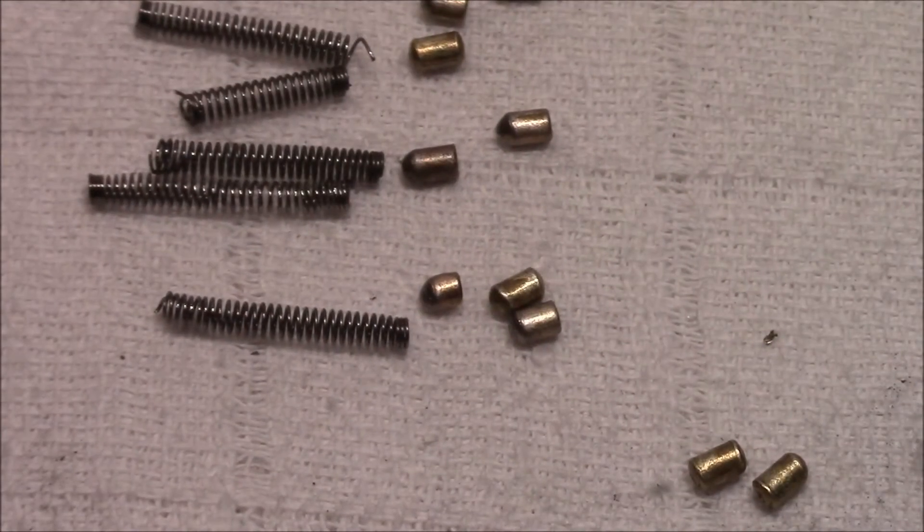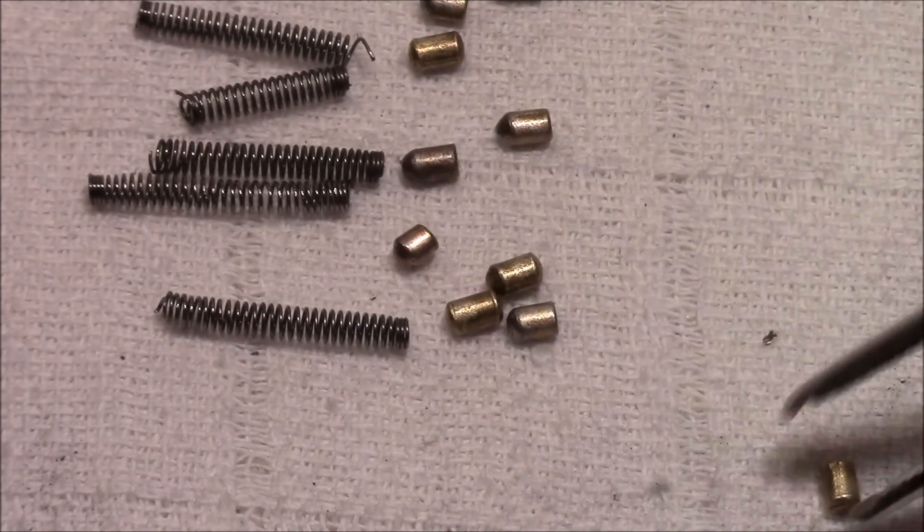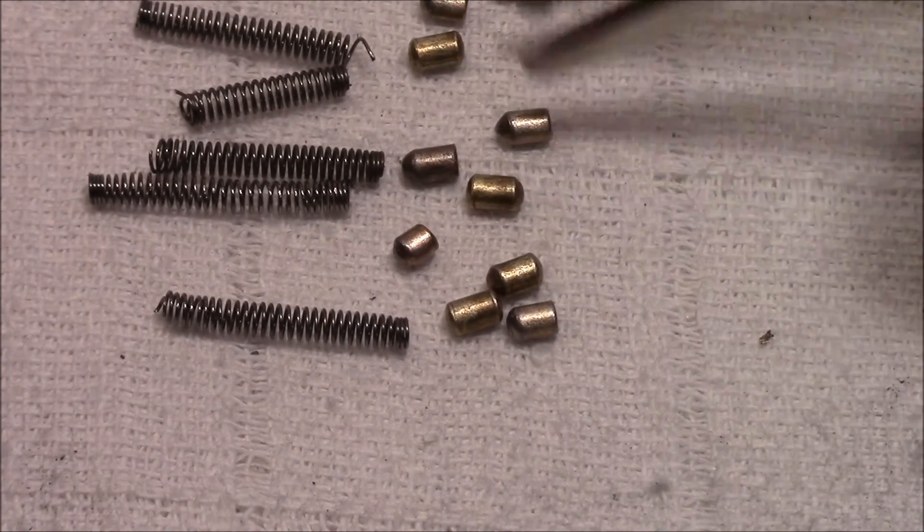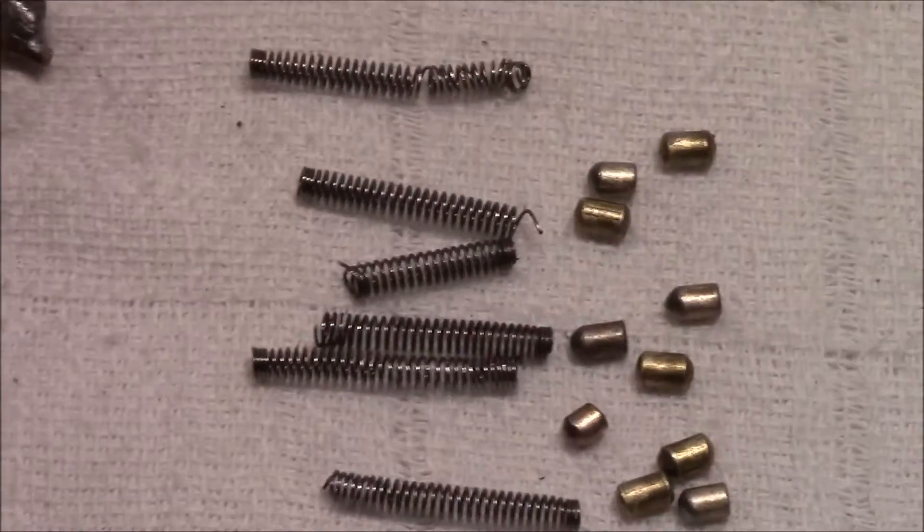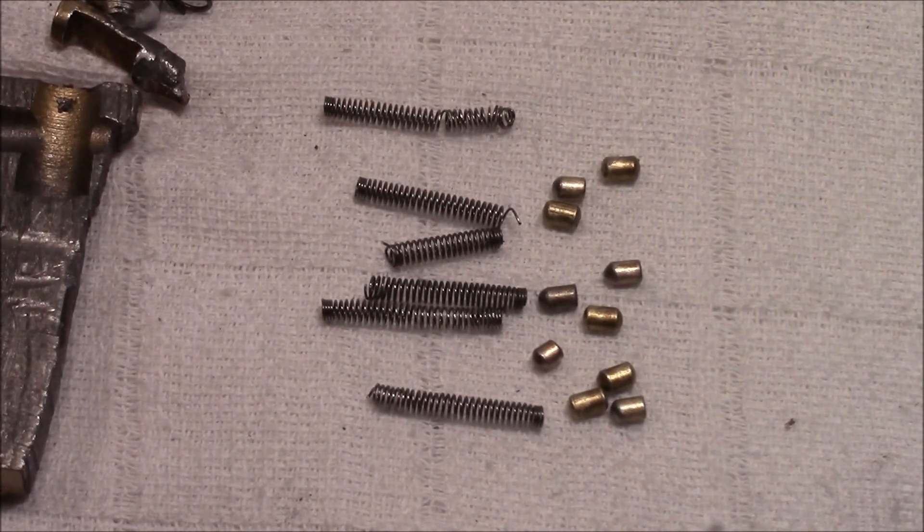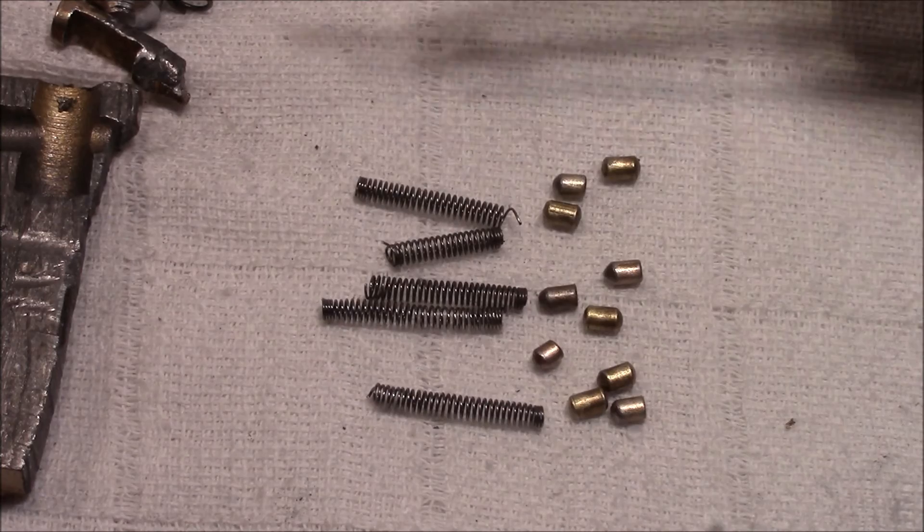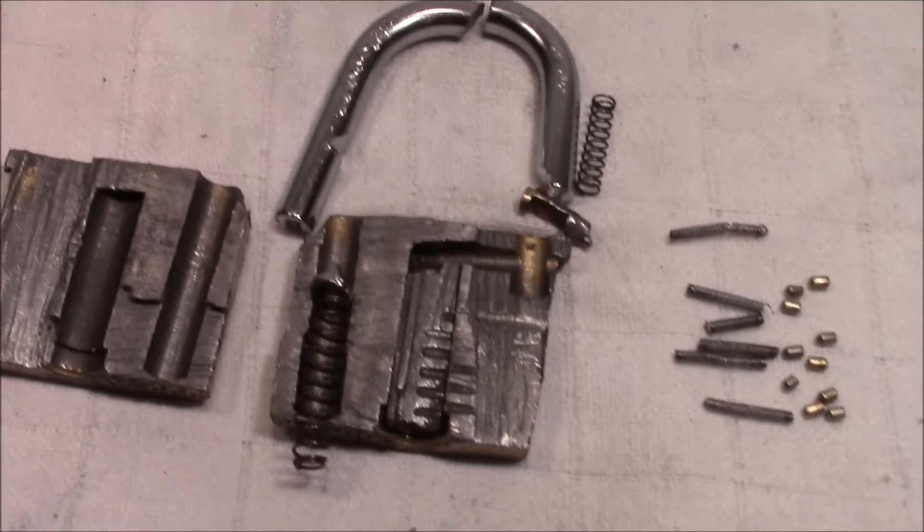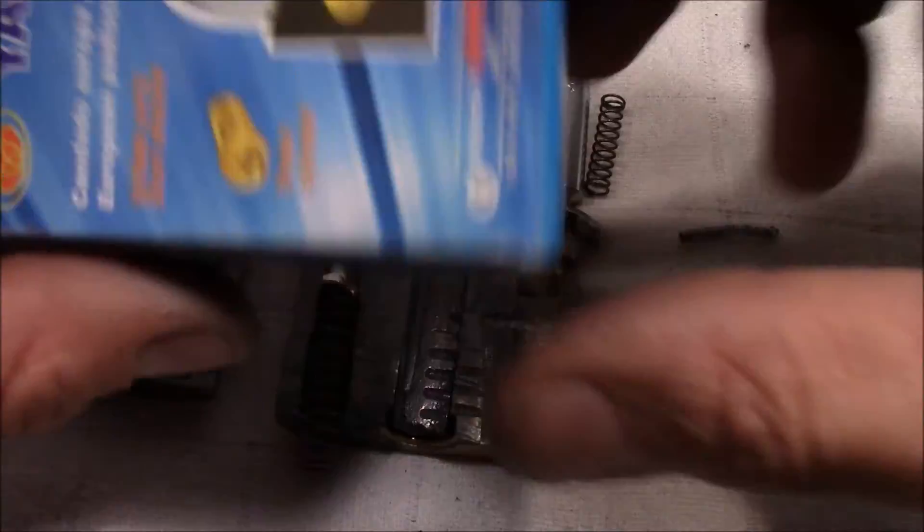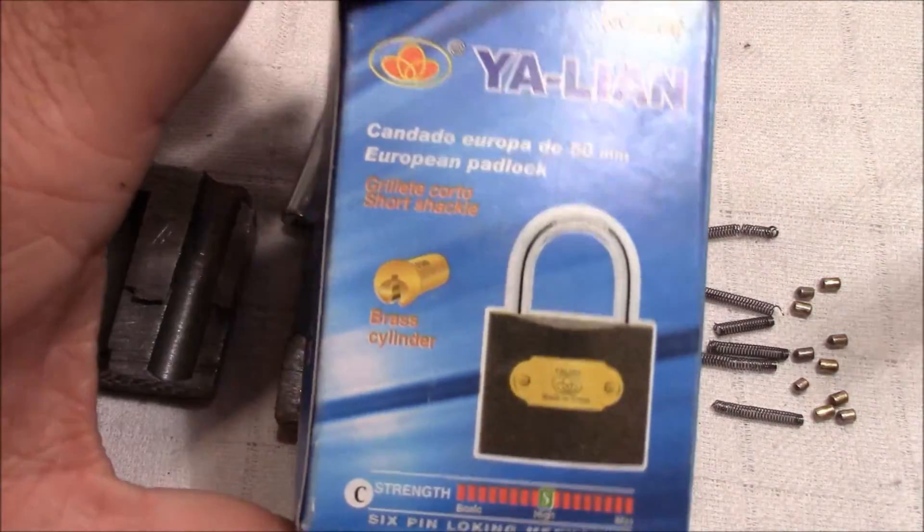And here we have the other half of the plug. So it has to be like this. The groove here is for the retaining pin and it prevents the plug from being pulled out all the way. And this groove here also prevents the plug from being turned too much, so it restricts the rotation of the plug. As I said, five pin lock.